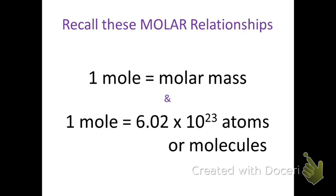Let's recall the conversion factors we will be using based on the molar relationships we have learned so far. We know that 1 mole is equal to 6.02 times 10 to the 23rd molecules or atoms from Unit 2, and that 1 mole is equal to the molar mass from Unit 4.